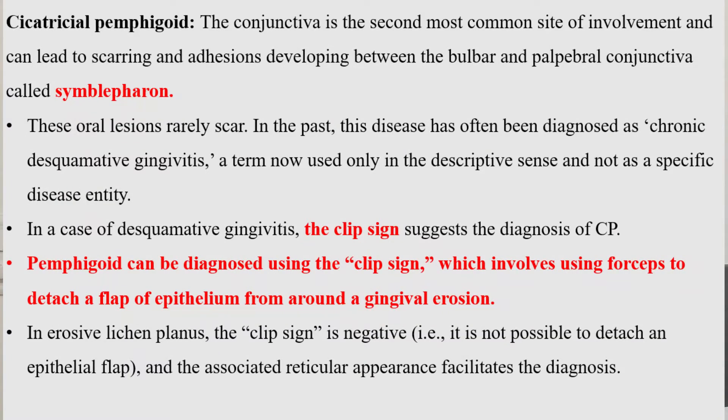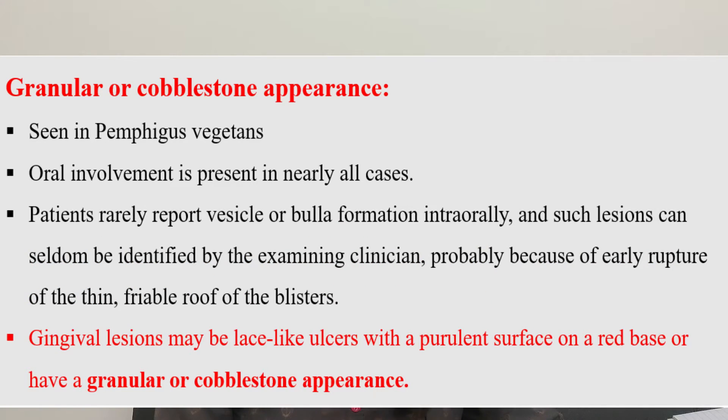There is another sign known as clip sign, which is positive in cases of mucous membrane pemphigoid. In these patients there is desquamative gingivitis but not many visible bullae or vesicles in the mouth. When you try to clip the gingiva with forceps, it gets clipped — that is known as the clip sign.